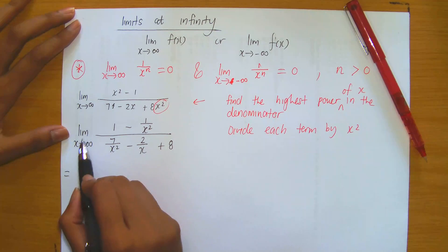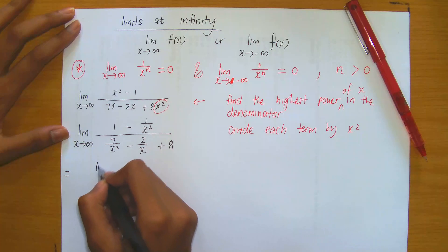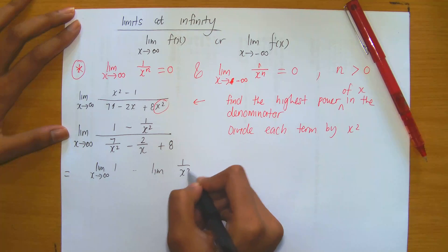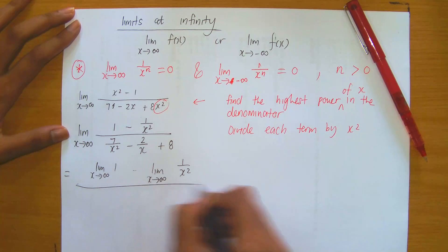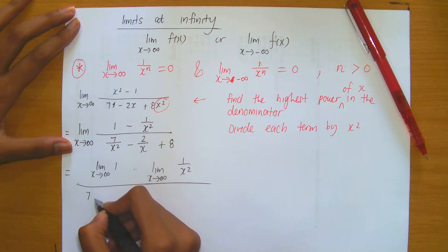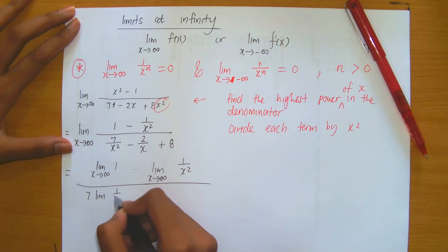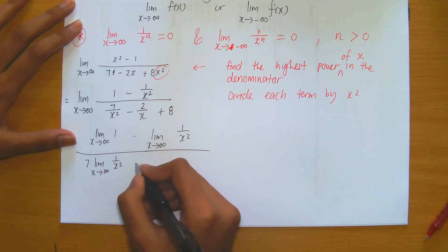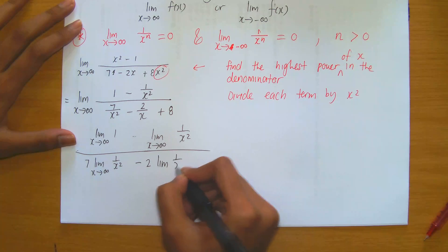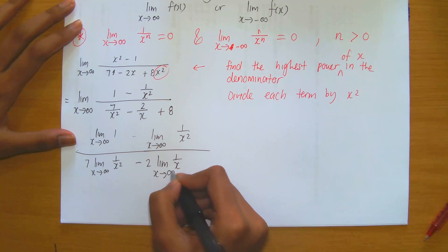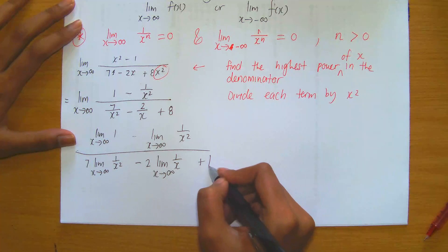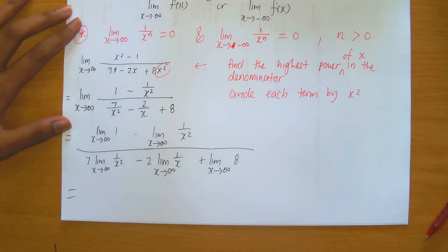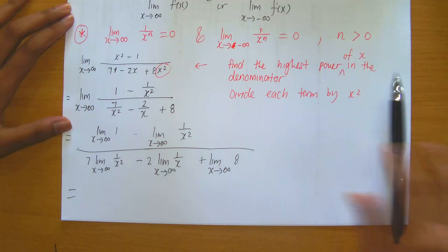Now simplifying, I distribute the limit into the numerator and denominator. In the numerator: the limit of 1 as x → ∞, plus the limit of 1/x² as x → ∞. In the denominator: 7 times the limit of 1/x² as x → ∞, minus 2 times the limit of 1/x as x → ∞, plus the limit of the constant 8 as x → ∞. Now we apply our limit properties and rule star.